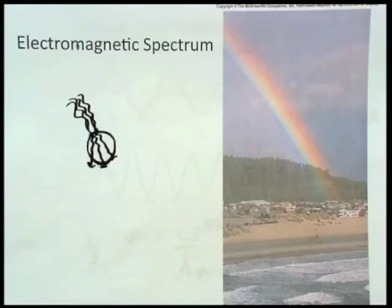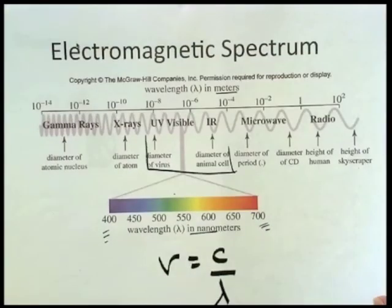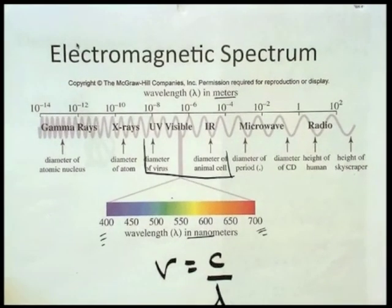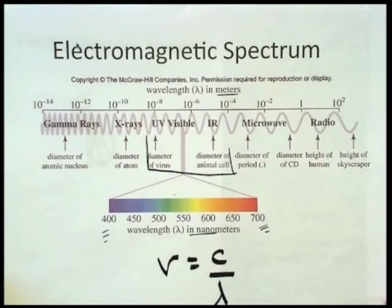The visible region of the spectrum is just a very small portion of the continual electromagnetic spectrum. The electromagnetic spectrum is a way in which energy moves through space and from one place to another.